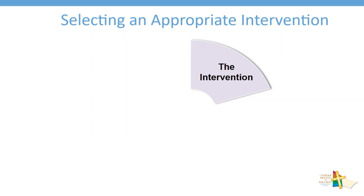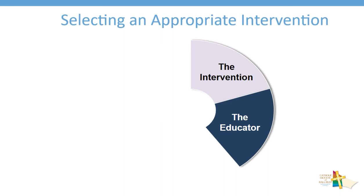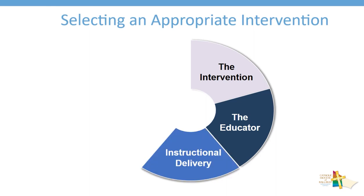The following elements and processes help simplify the complex task of determining the most appropriate intervention match for any student or cohort of students. You will investigate the intervention and determine whether it is research-based or evidence-informed. You will determine who will be best placed to oversee and deliver the program. You will examine for evidence that the instructional delivery includes key elements of instruction that are known to be effective. You will need to develop an understanding of the school resources that will be required to implement the intervention with fidelity.